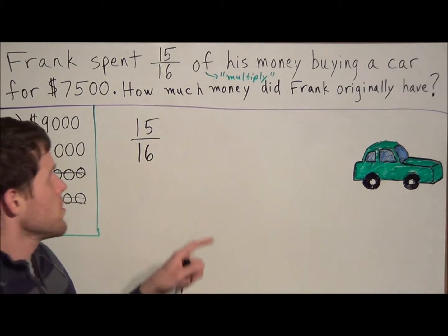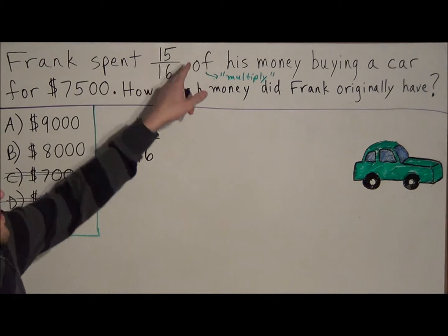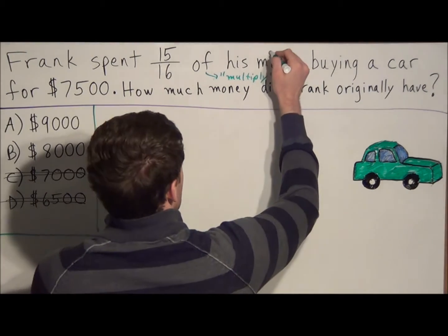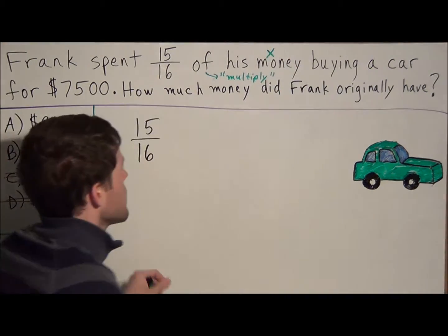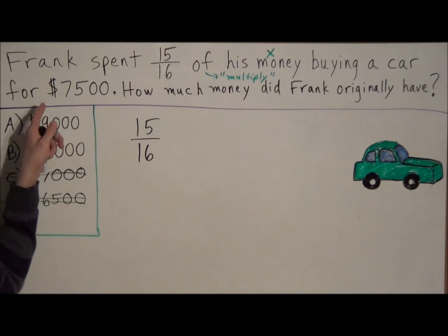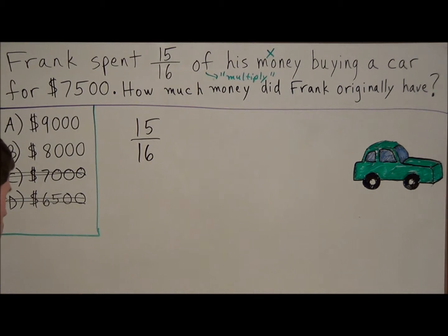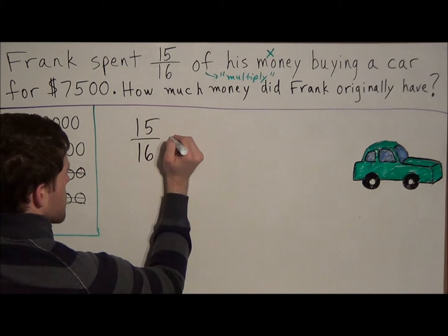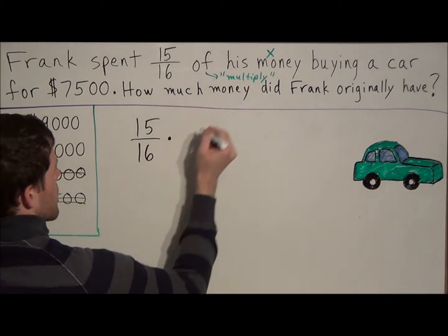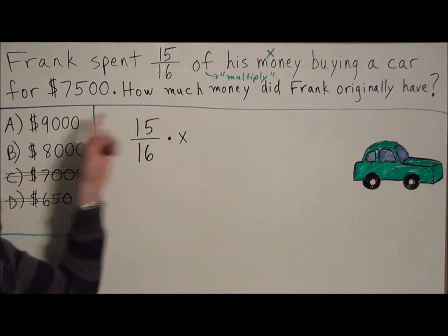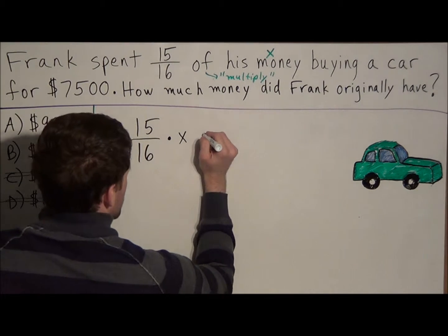And whenever we have an unknown, in this case, 15 sixteenths of his money, we don't know how much money he has, so we could call this part X. And they're telling us that 15 sixteenths of his money equals $7,500. So the problem we can set up, we have 15 sixteenths of tells us to multiply, his money is X, and that amount for the car costs $7,500.